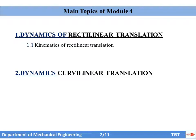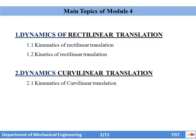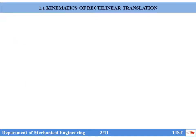The main topics of Module 4 are: dynamics of rectilinear translation and dynamics of curvilinear translation. In this lecture, I will discuss Topic 1.1, which is Kinematics of Rectilinear Translation only. Topics 1.2, 2.1, and 2.2 will be discussed in coming videos.